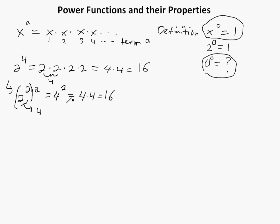So what actually happens — you could apply this in general. Instead of just 2, you'll have x to the a times b, and this just becomes x to the a to the b. Or you could even switch it around: x to the b to the a. So you do the power of one, then the other — it doesn't matter. That's a simple way of showing it.